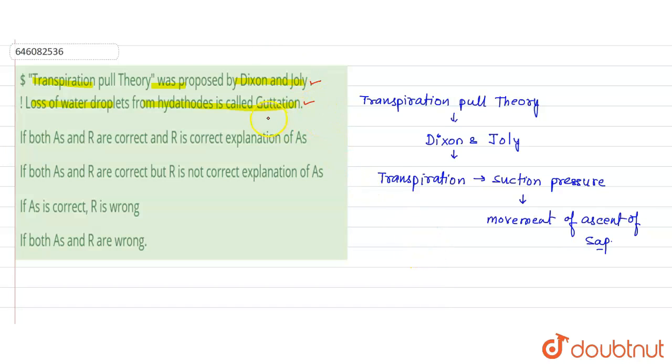Now talking about guttation. Guttation is basically the loss of water droplets from hydrothodes. These are the small pores that are present on the stem, and sometimes the liquid basically oozes out or comes out from these hydrothodes.